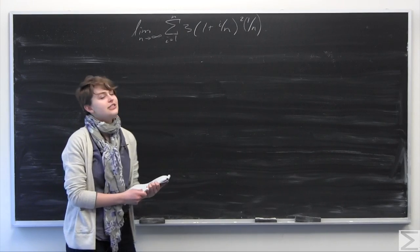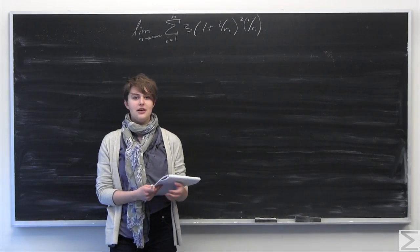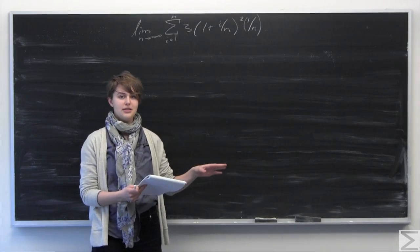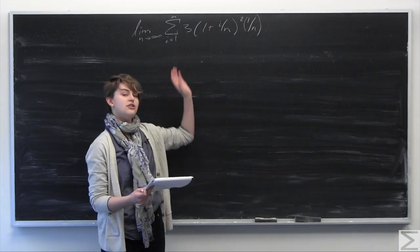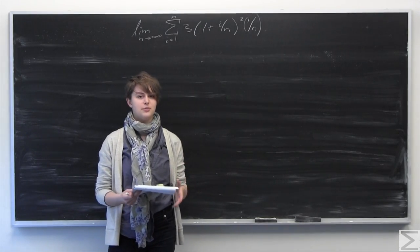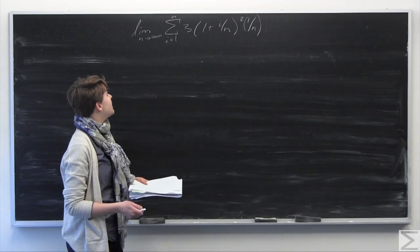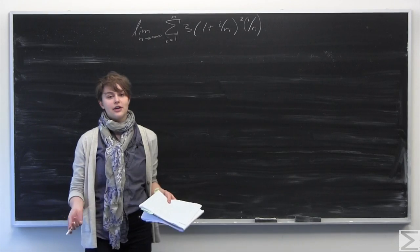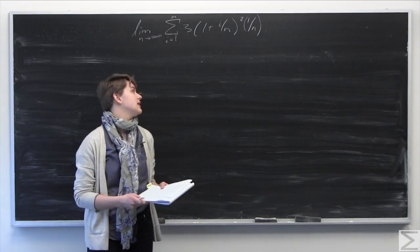We're going to take this in two steps. The first step is going to be simplifying the summation using the properties of summation. And finally, the last step is going to be evaluating the limit, taking the limit as n goes to infinity.